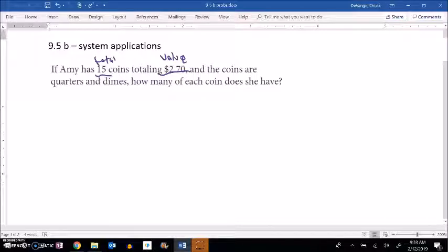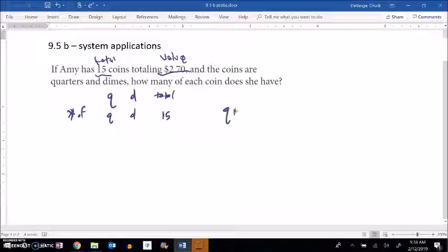First off I have quarters and dimes, so I'm just gonna let Q stand for quarters and D stand for dimes. I know that there's a total of 15 of them, so there's one of my equations right there: Q + D = 15. Of course you could use X and Y or A and B, whatever variables you want.